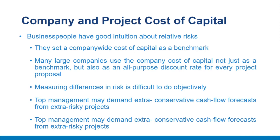In summary, the company cost of capital is the appropriate discount rate for average-risk projects. If projects are riskier than the average firm risk, they should be discounted at rates that reflect their specific risk, estimated using models such as CAPM. Companies often use conservative cash flow forecasts for risky projects, though the appropriate approach requires using a cost of capital that is efficient but difficult to estimate.